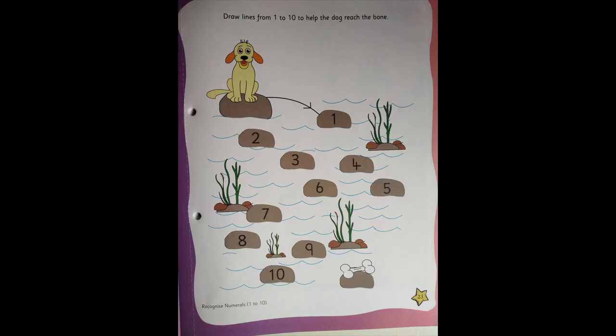And it is a fun activity on page number 23. It's a very fun activity, children. You are going to draw lines from 1 to 10 and help the dog reach the bone. You are going to join all the numbers in sequence. If you join the lines, the dog will jump and reach the bone and enjoy it. Have fun with this page.